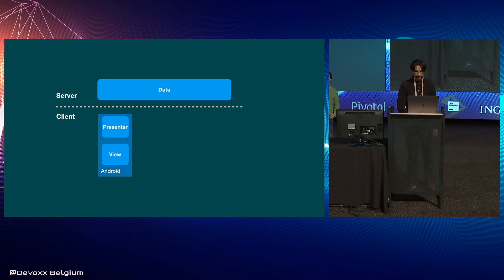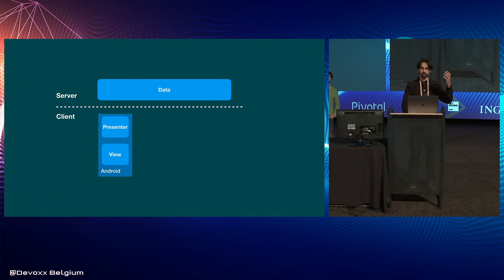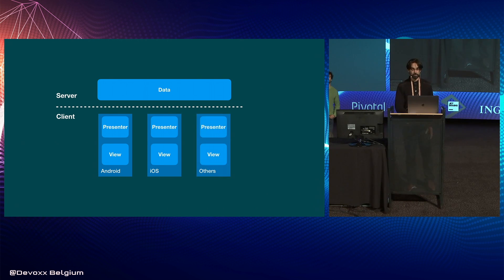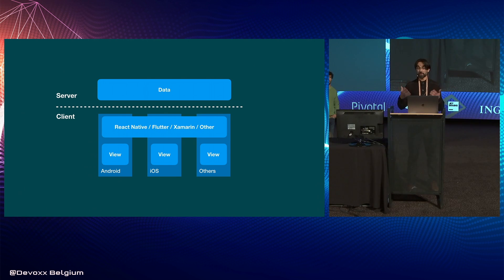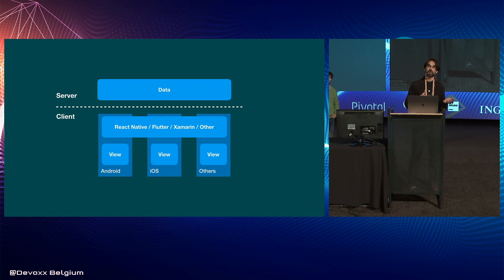In the client-server architecture, this presenter logic ends up on the client — the client deciding what trips to display on the home. But if you support Android, iOS, and potentially other platforms, you need to duplicate this logic for as many platforms as you support. One alternative is a cross-platform solution like React Native, Flutter, or Xamarin. For us, we decided it was more appropriate to go the native route with an Android native app and an iOS native app.